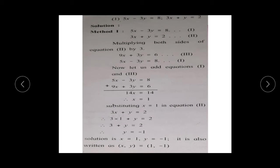Consider the example: 5x - 3y = 8 and 3x + y = 2. These 2 equations are simultaneous linear equations in 2 variables x and y. To solve this means we want to find the value of x and y. First, give the numbering to the equations — equation number 1 and equation number 2.